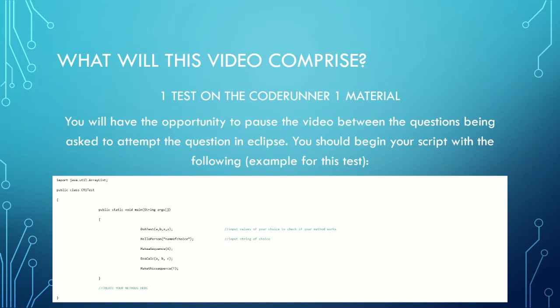This will be the first test out of hopefully many on the channel. After every question I will explain when you can pause it and attempt the question yourself in your own Java project on Eclipse. You should begin by typing the code that you see in the white box below, so that import java.util.ArrayList will be important for the final question on ArrayLists. Make sure that instead of just putting the variable names in the functions you're calling within main, you're putting actual values, and then create your methods where you see that comment below the main.